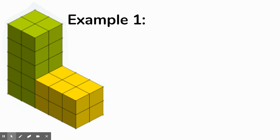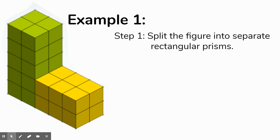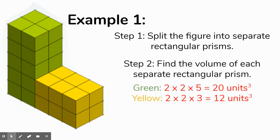Let's look at example one, where I've chosen to split it this way. After you split it, we're going to find the volume of each separate prism. The green one has a length of 2, a width of 2, and a height of 5. Our formula for volume is length times width times height — we can do it in any order. So 2 times 2 times 5 gives us a volume of 20 cubic units for the green prism.